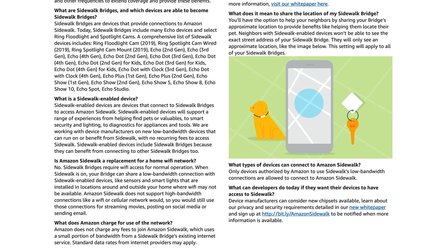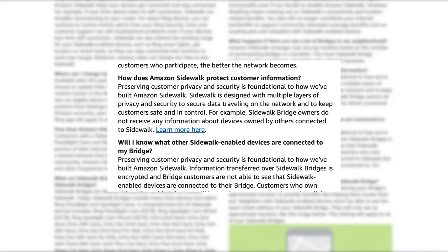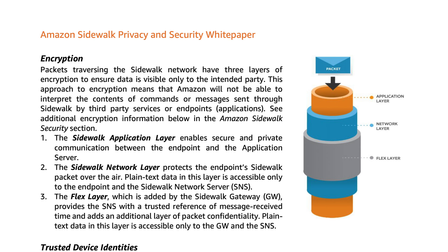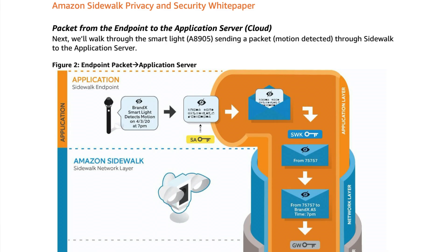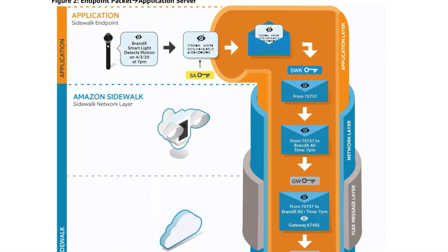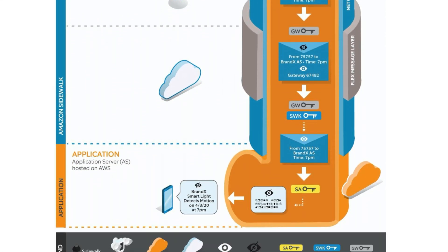Another example of functionality that Amazon says will come is location tag tracking. If your pet has a Sidewalk-enabled tracker on its collar, for example, the network can essentially show where that device is. The obvious concern here is the privacy aspect of things. Amazon says that security and privacy are foundational to how they designed Sidewalk, with multiple layers of encryption and by minimizing any metadata that is sent over a Sidewalk. Amazon has a security white paper published for those interested in the finer details of the network encryption and communication. There's a link to it below.